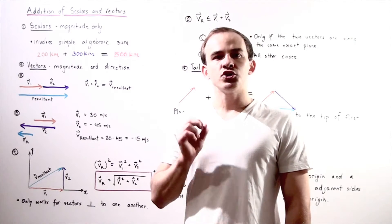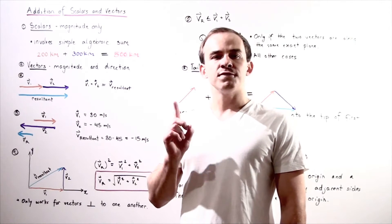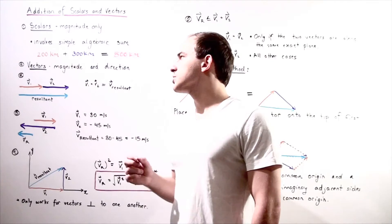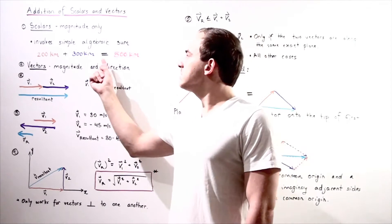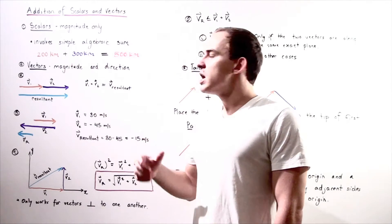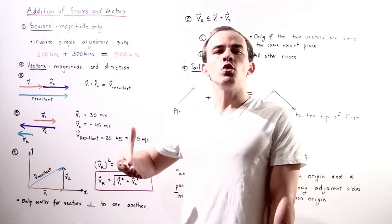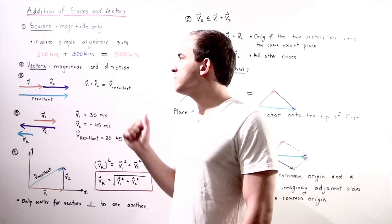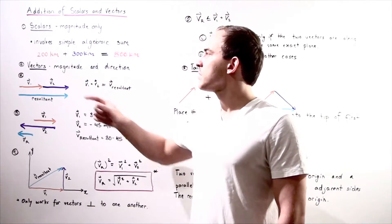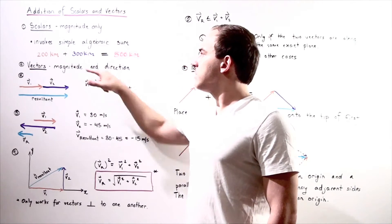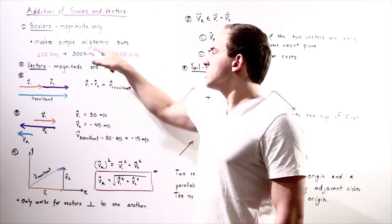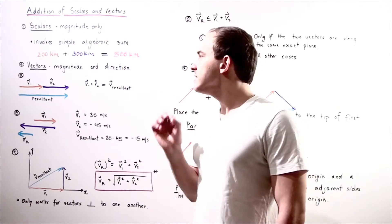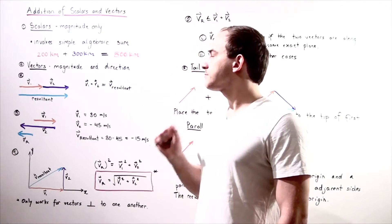Let's suppose some car travels in the first day a distance of 200 kilometers, and in the second day a distance of 300 kilometers. To find the total distance in the two-day period, we simply add these two scalar values up. So 200 kilometers plus 300 kilometers gives us 500 kilometers as our total distance.